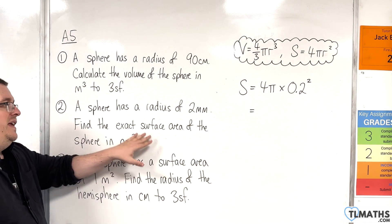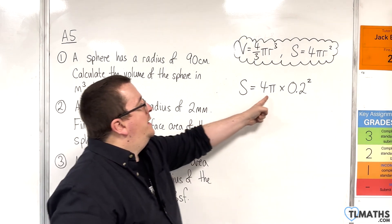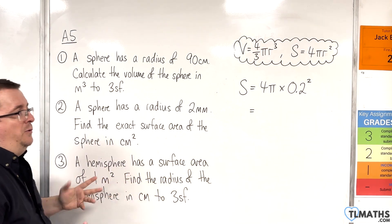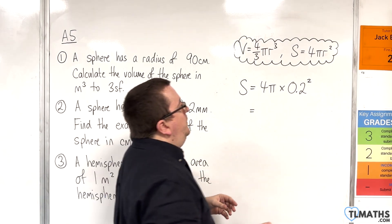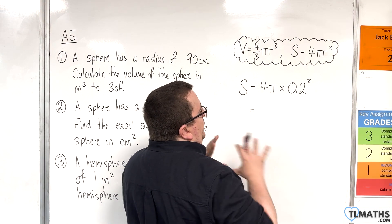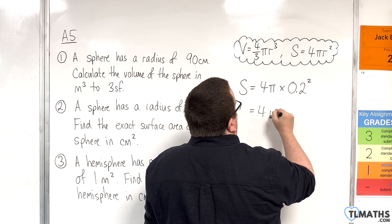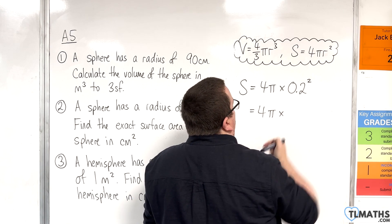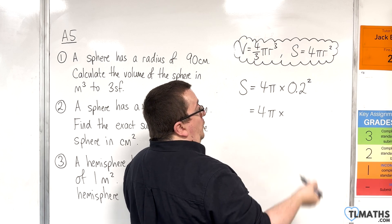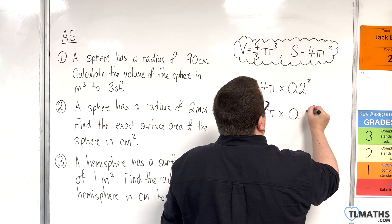Now, because it's asking us for the exact surface area, I don't really want to use a calculator with pi. Otherwise, it's going to turn it into decimals. I don't want that. So I don't want to do any rounding here. I want the final answer to be exact. So, what is 0.2 squared? Well, 2 squared is 4, and we have two numbers to the right at the decimal point, so that's 0.04.